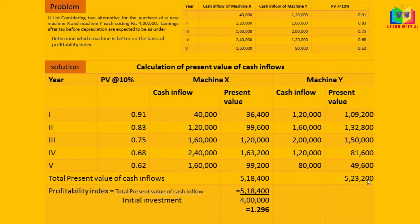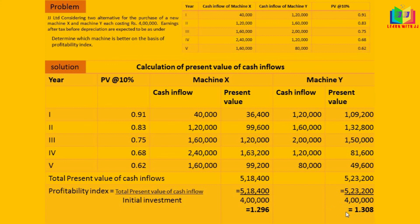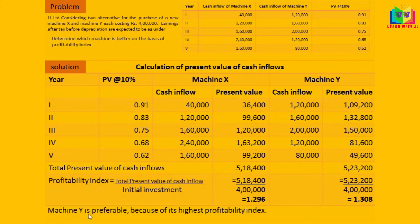For Machine Y: 5,23,200 divided by 4,00,000 gives a profitability index of 1.308. Comparing the two, Machine Y gives the higher profitability index — 1.308 versus 1.296 for Machine X. Therefore, Machine Y is preferable because of its highest profitability index.